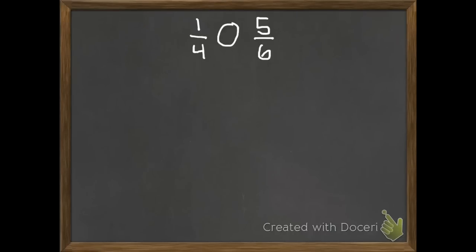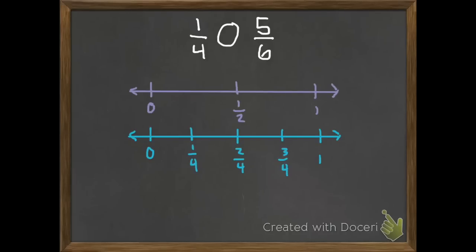If I have these two fractions, one-fourth and five-sixths, we can use a fraction that's a little more common to us, such as one-half. I'm going to draw a number line with one-half, and then I'm going to draw a number line for my other two fractions, one-fourth and five-sixths. After I've made these number lines,